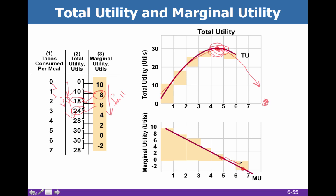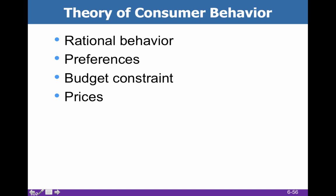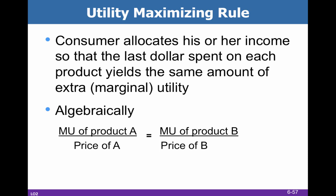And then you'll notice in this example that marginal utility actually becomes negative. So in our theory of consumer behavior, we assume rational behavior, that we have preferences, that there are budgets that we live within, and that price is used as our medium of exchange.